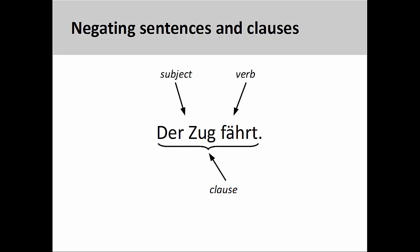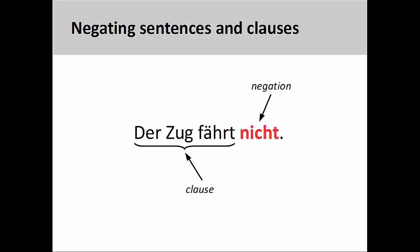When negating entire sentences and clauses, however, nicht must come at the very end. The sentence you see here, der Zug fährt, is a simple clause consisting of a subject, der Zug, and a verb, fährt. To negate this clause, you simply need to insert nicht at the very end: der Zug fährt nicht — the train is not running. We'll negate a more complex clause at the end of this presentation.